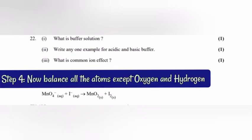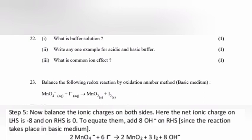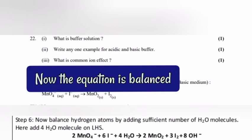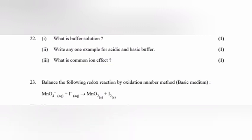Step 4: Now balance all the atoms except oxygen and hydrogen. Step 5: Now balance the ionic charge on both sides. Here, the net ionic charge on LHS is minus 8 and on RHS is zero. To equate them, add 8 OH minus on RHS. Step 6: Now balance hydrogen atoms by adding sufficient number of H2O molecules. Here, add 4 H2O molecules on LHS. Now the equation is balanced.